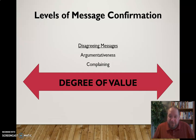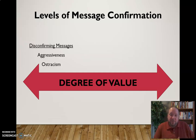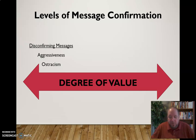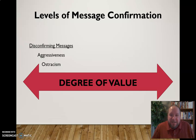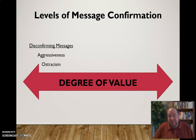On the lower end of the degree of value, you have truly disconfirming messages like aggressiveness and ostracism. Aggressiveness — the most contemporary example being bullying — is when we verbally assault somebody, tear them down, with the very specific intent to put them down and keep them at a lower level. That conveys a real lack of value. Ostracism is when you totally exclude someone — like in elementary school when a group just agreed to ignore one person, not even acknowledging their existence or pushing them out of the group. That obviously conveys a real lack of value for that person.